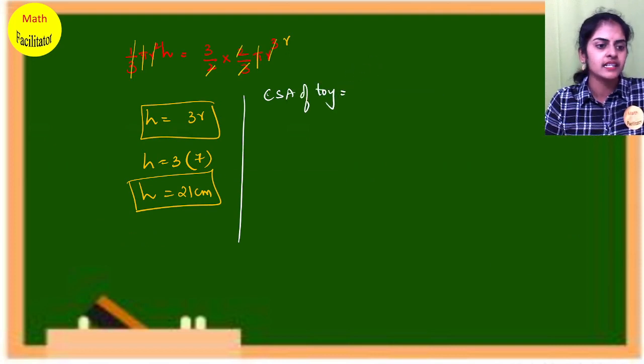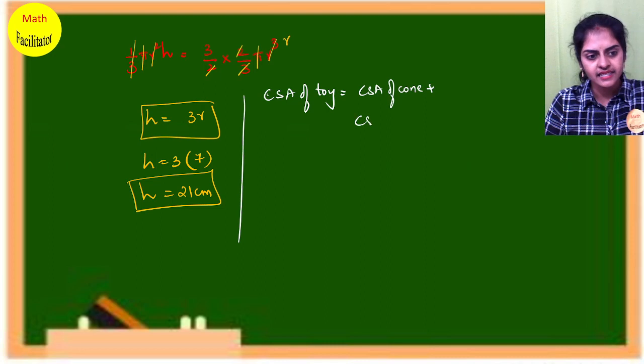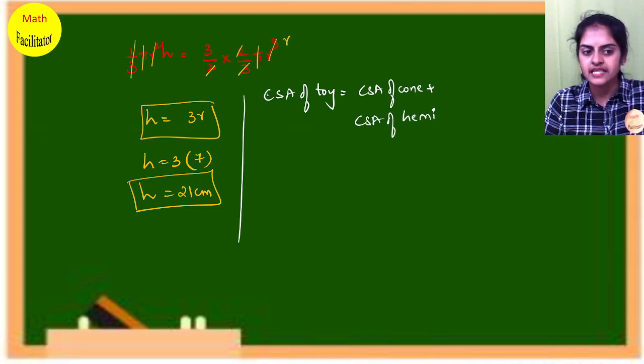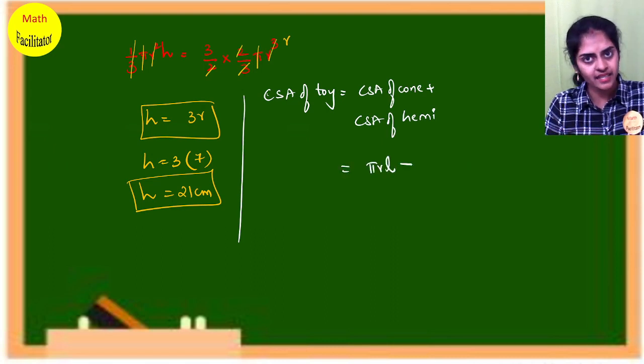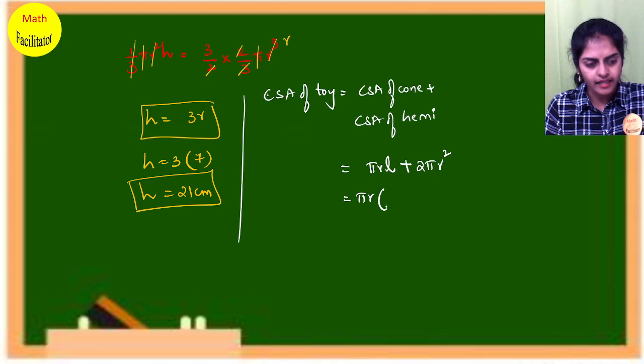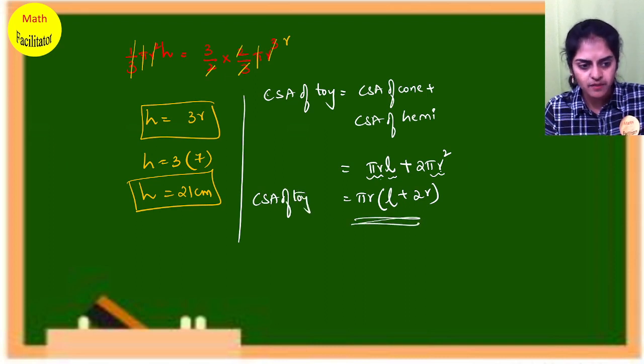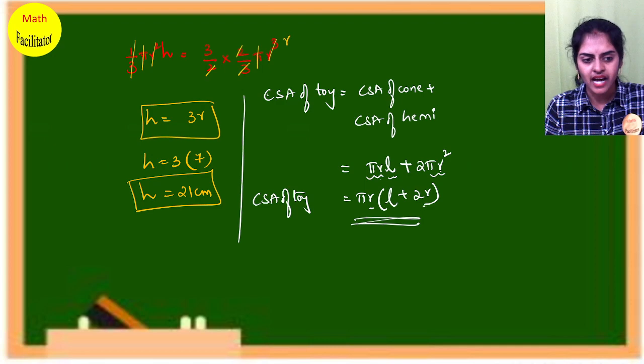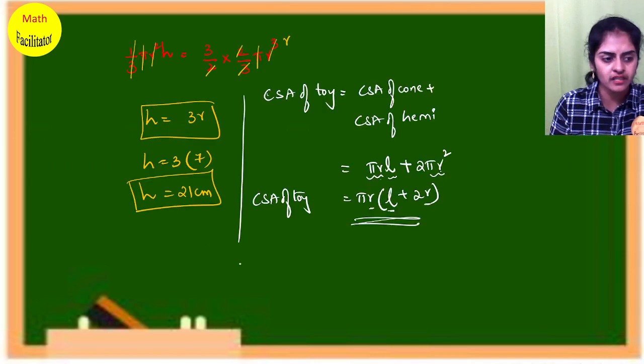So CSA of the toy is CSA of cone plus CSA of hemisphere. CSA of cone is πRL, CSA of hemisphere is 2πR². Taking πR common: πR(L + 2R). This is the formula for CSA of toy. But I have my R value; I need L value. How will I get L value?